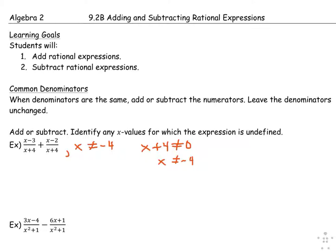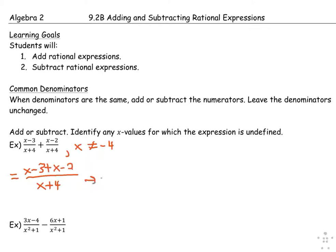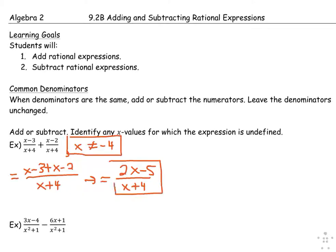I proceed with the problem. Already having common denominators, I make it just one denominator, and then I operate using the plus sign. So I have the first numerator added with the second numerator. Simplifying like terms, I have 2x minus 5 all over x plus 4, and with my exclusion from the beginning and my sum of rational expressions, I have my final answer.